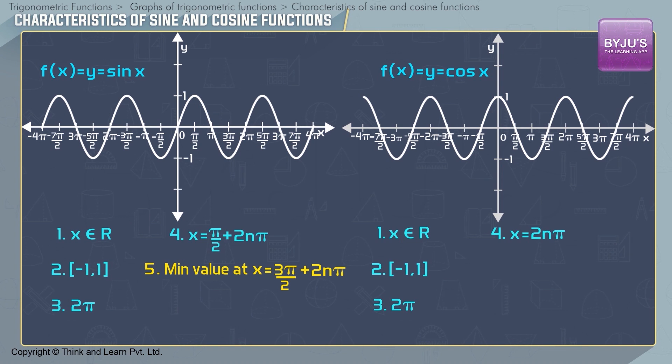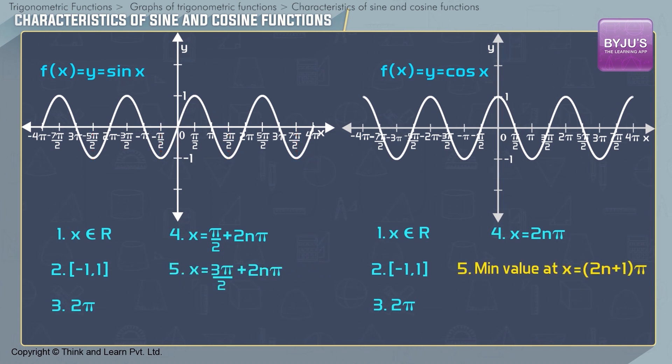The minimum value of y = sin x, that is -1, occurs when x = 3π/2 + 2nπ. The minimum value of y = cos x, that is again -1, occurs when x = (2n+1)π. In all these cases, n is an integer.